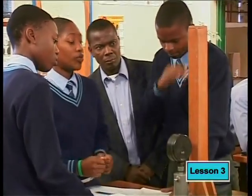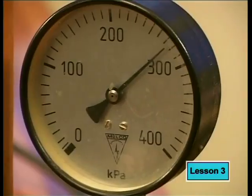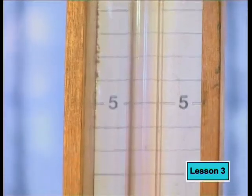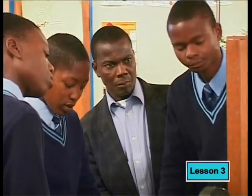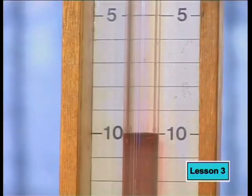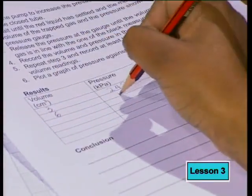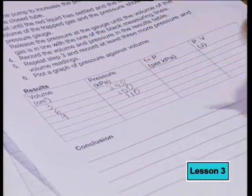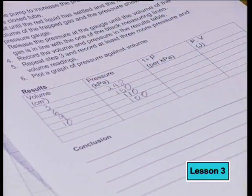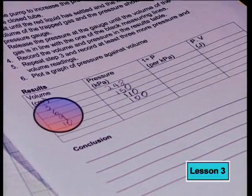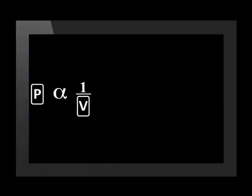Then our last reading is the atmospheric pressure. The volume is at 10.1. This is the worksheet that the learners received. Look at the table of data that they were asked to collect. Remember that what they are investigating is the relationship between pressure and volume. Looking at these readings, you should pick up a trend. Do you notice that as the values for pressure increase, the values for volume decrease?